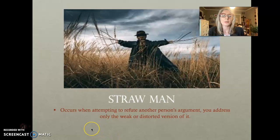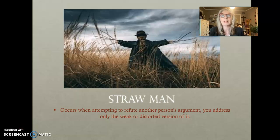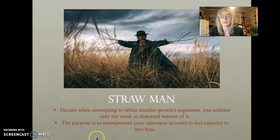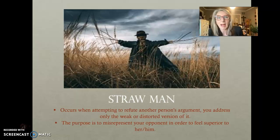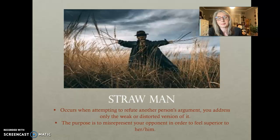Strawman argument occurs when, attempting to refute another person's argument, you address only the weaker version of it. You focus on pieces of the argument that are already incorrect and don't address the real issue. The purpose is to misrepresent your opponent in order to feel superior to them. Think about when you've had an argument with your significant other — I'll find the weak points in her argument and point them out instead of addressing the real complaint or issue, so I can feel superior.